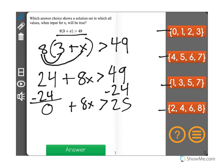I know 0 has no value, so really this is just saying 8x is greater than 25. So for any value of x that I put in, it needs to be greater than 25.